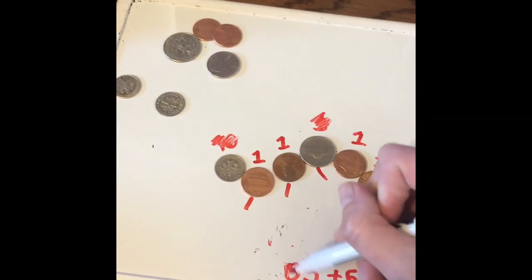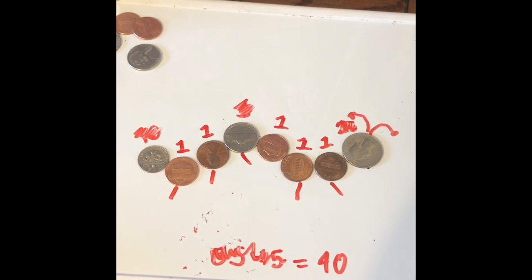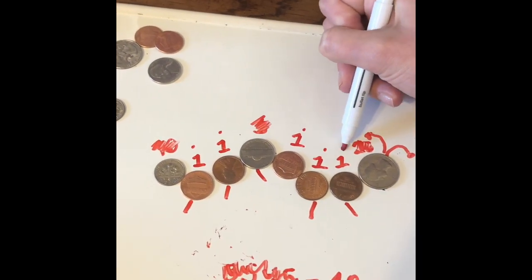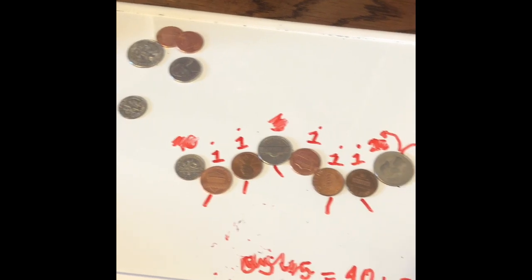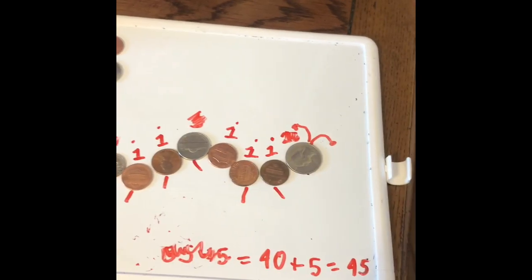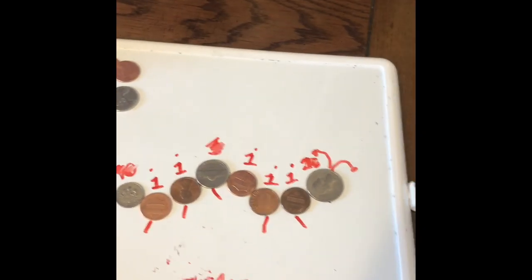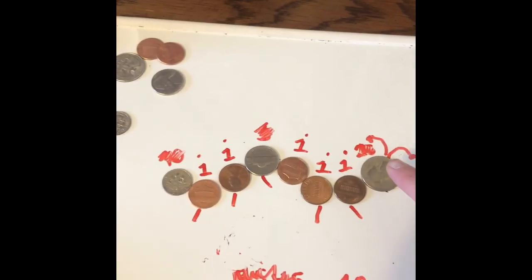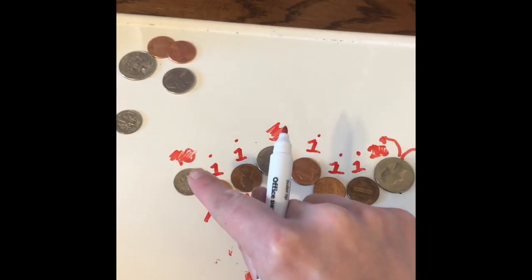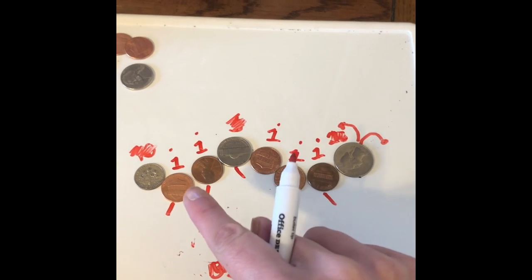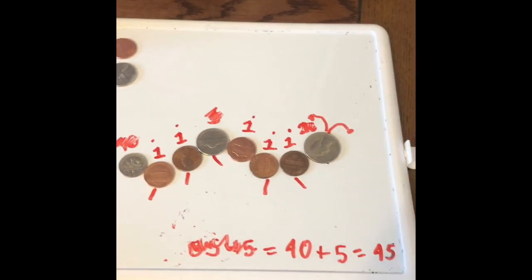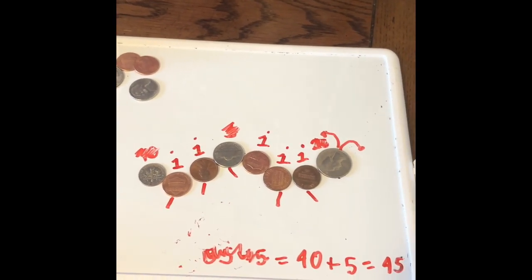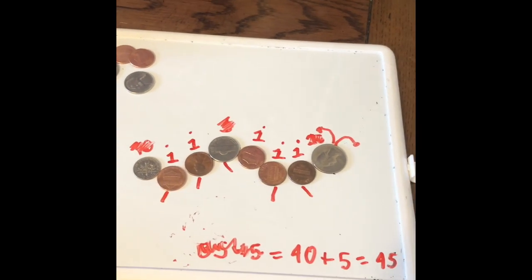I just keep crossing out or erasing the numbers I've already added so I don't get confused. Now I just have to add my ones: 41, 42, 43, 44, and 45. So 40 plus five more ones equals 45. I've successfully added up all of my coins — my coin caterpillar is worth 45 cents! Just to double check: 25 plus 10 is 35, 35 plus 5 is 40, then 41, 42, 43, 44, 45 cents. Feel free to make your caterpillar as long or as short as you'd like. Good luck and have some fun!